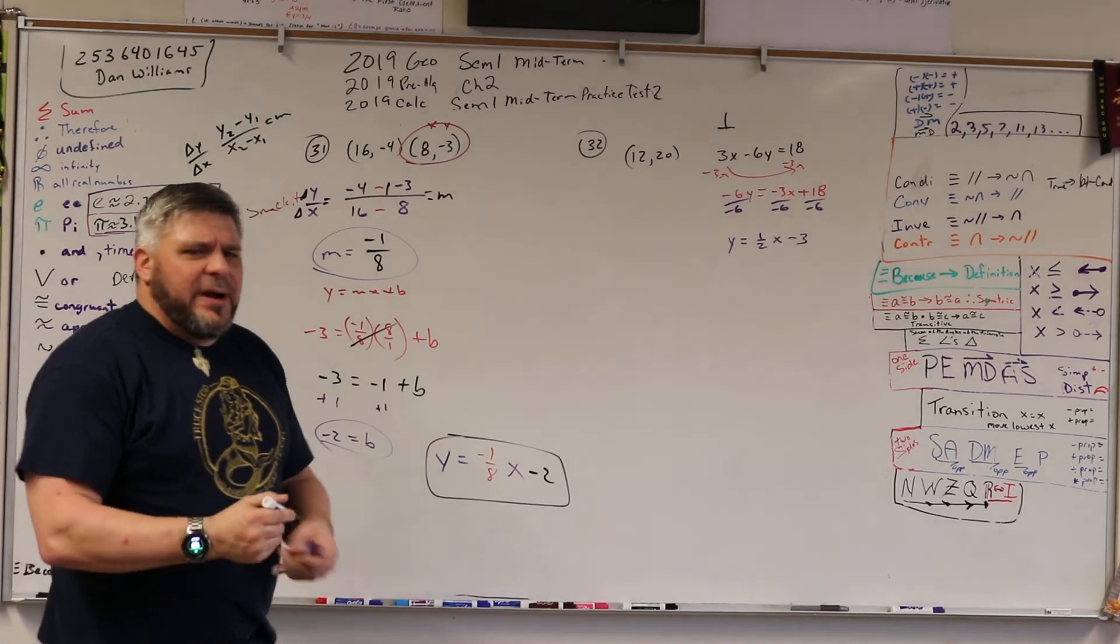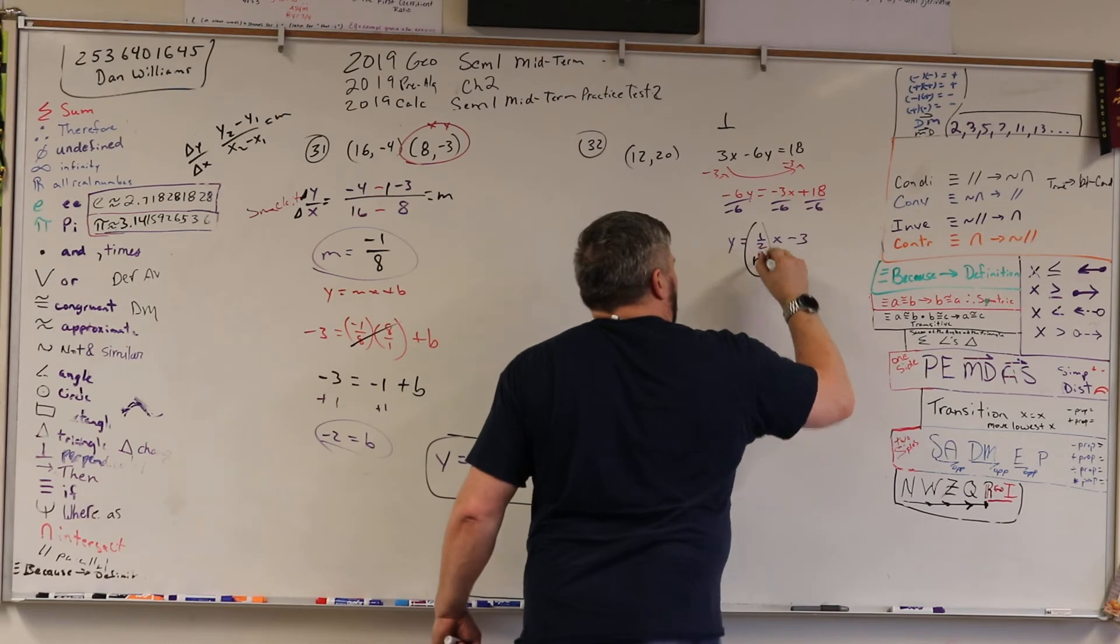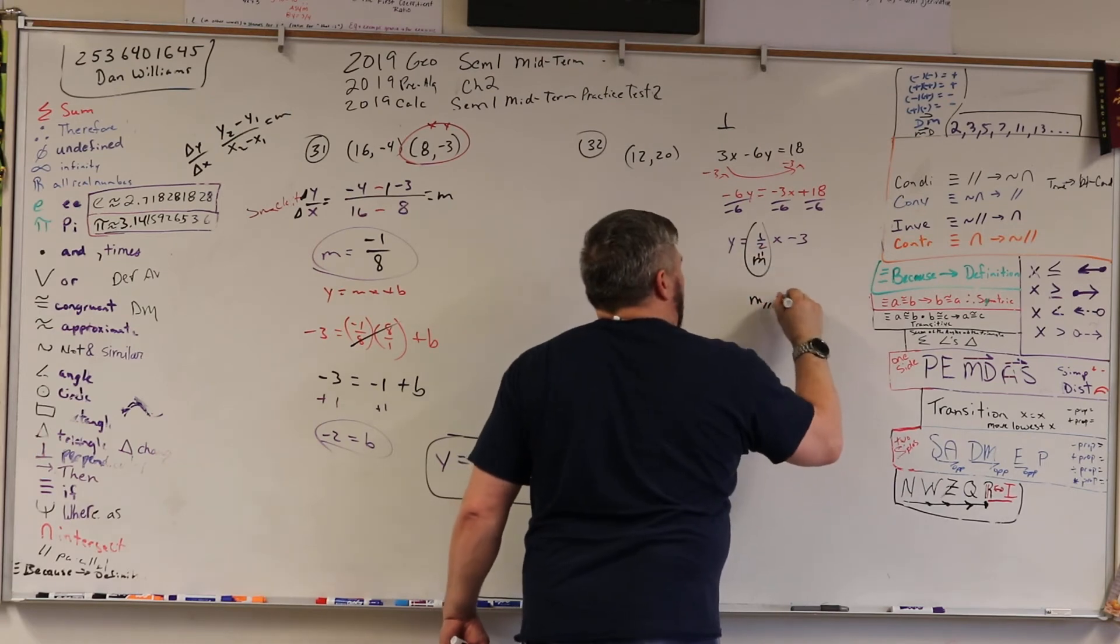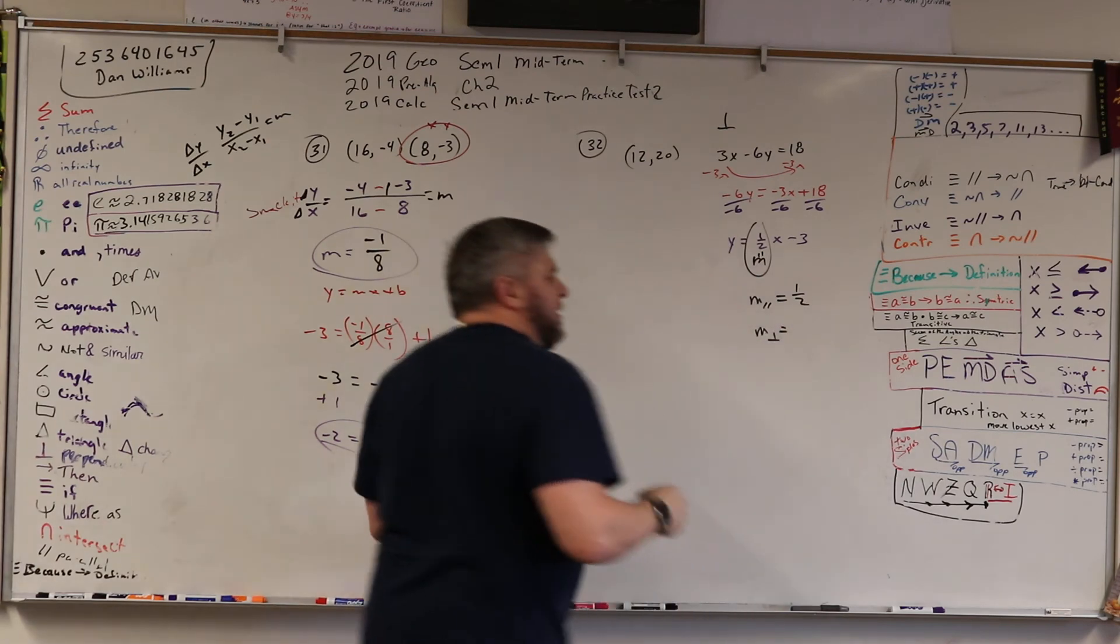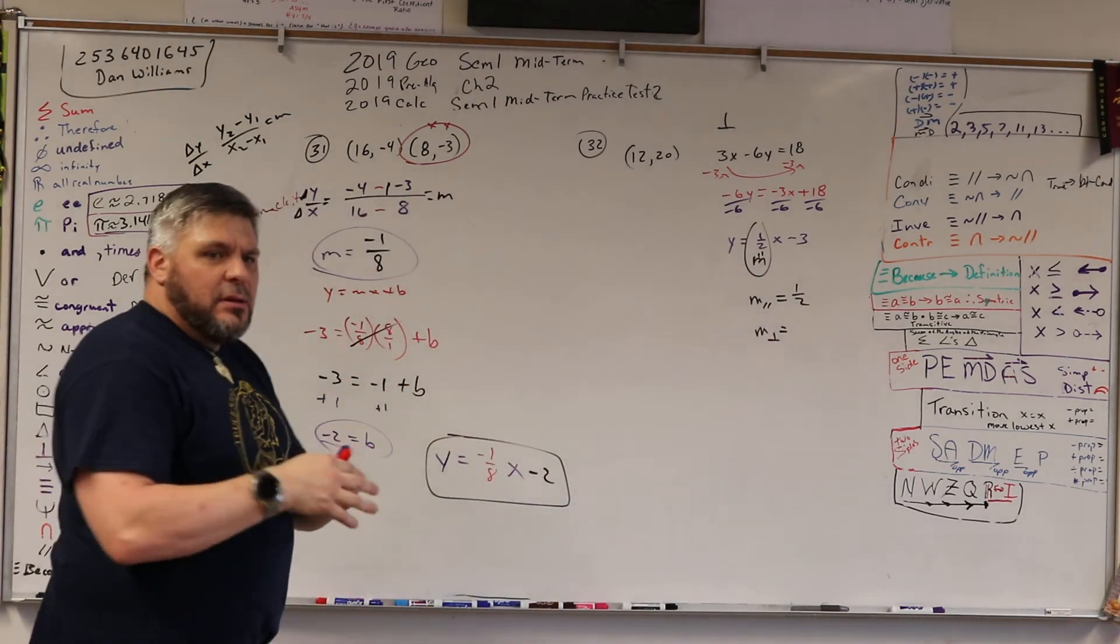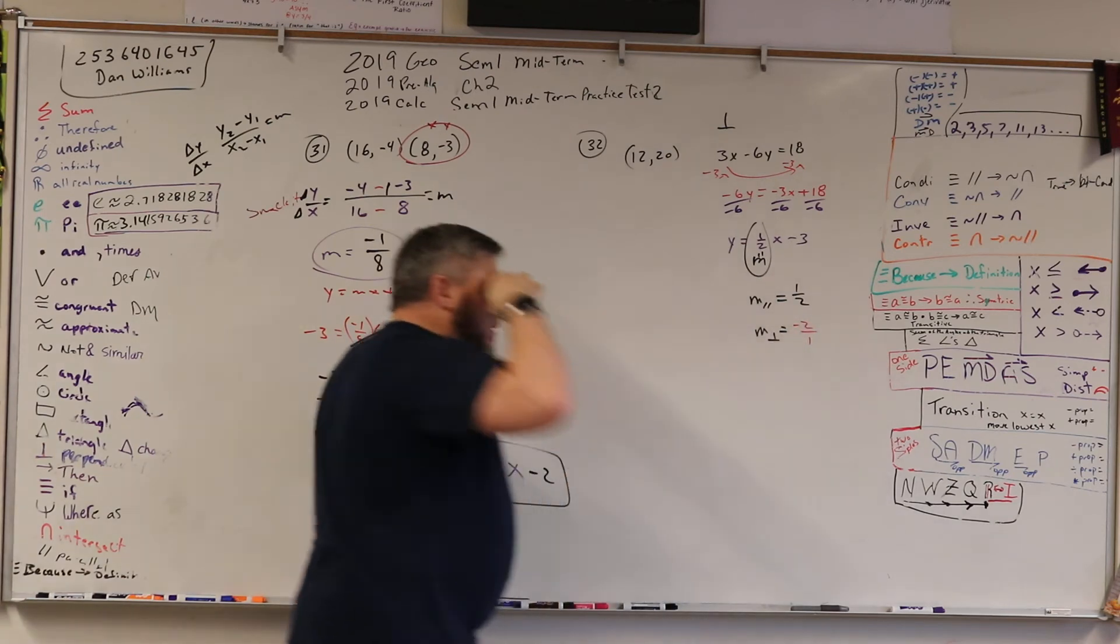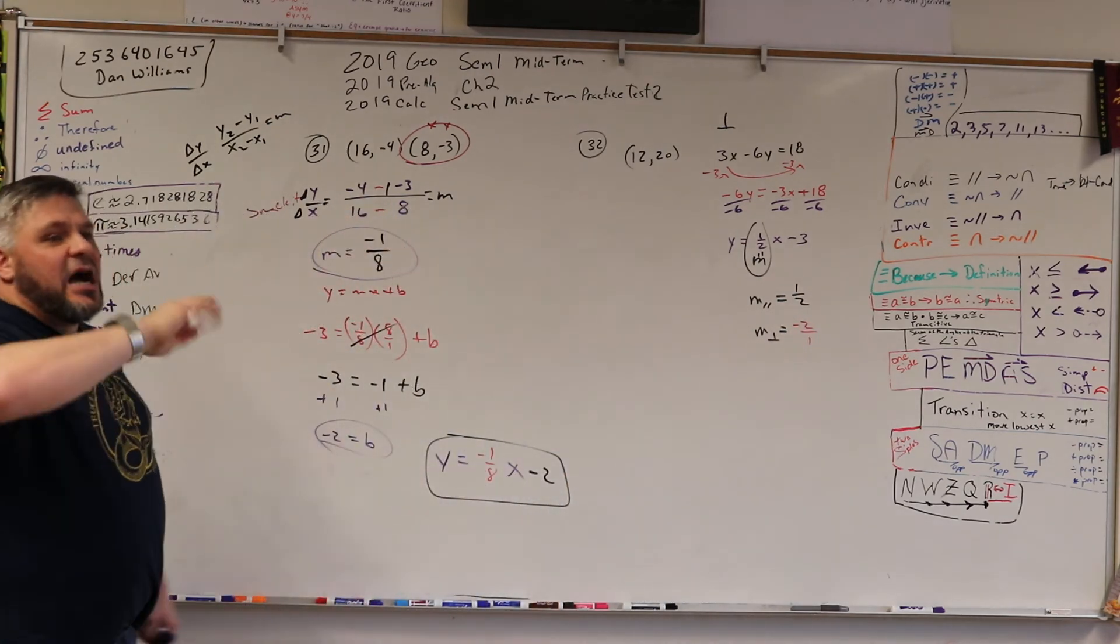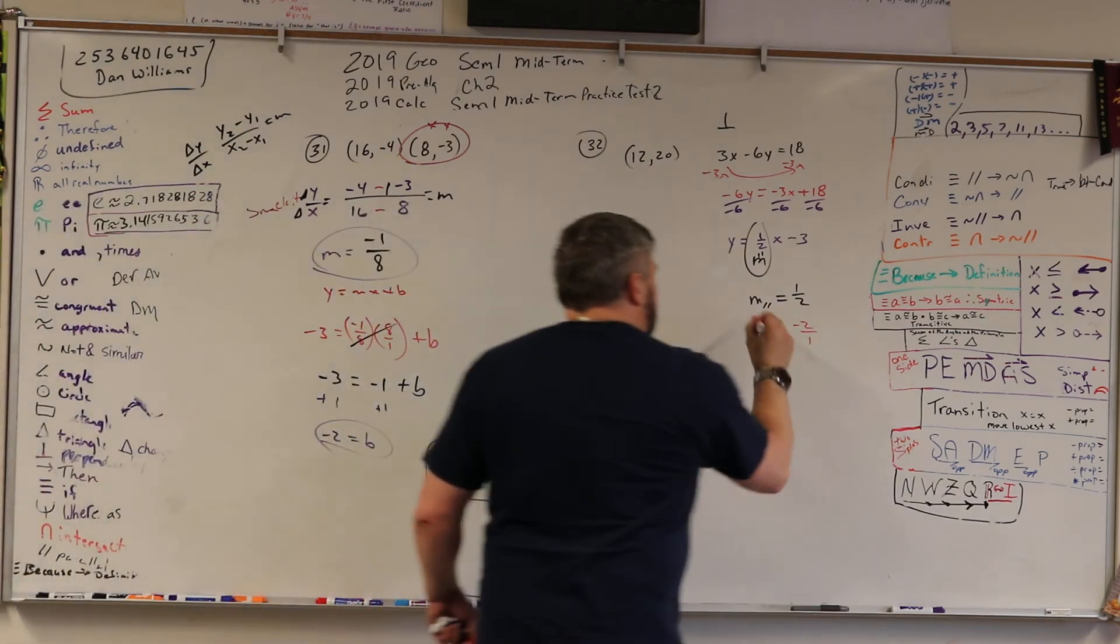Now, the only thing I care about is slope, m. So m parallel is 1/2, but m perpendicular is what? Negative 2 over 1. You have to flip it, so it's the opposite inverse. That's the key.